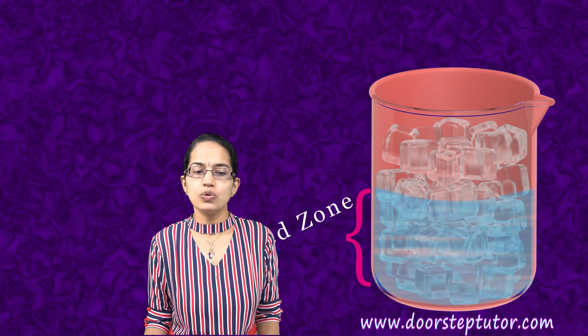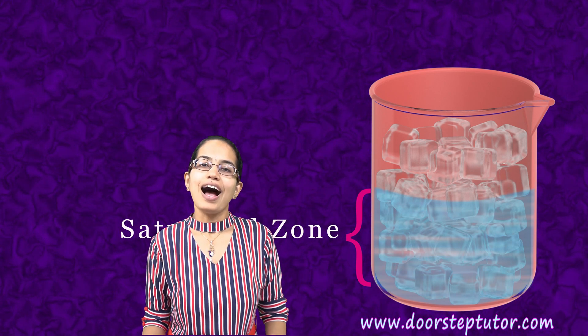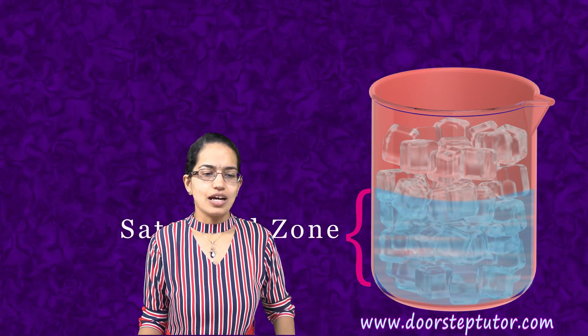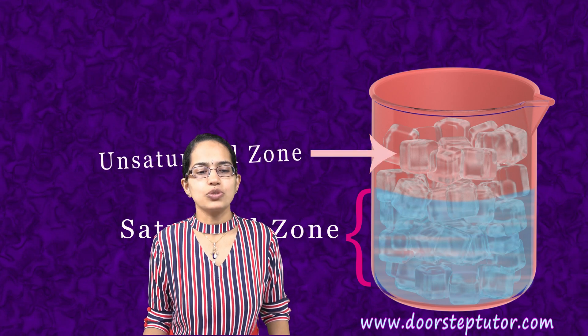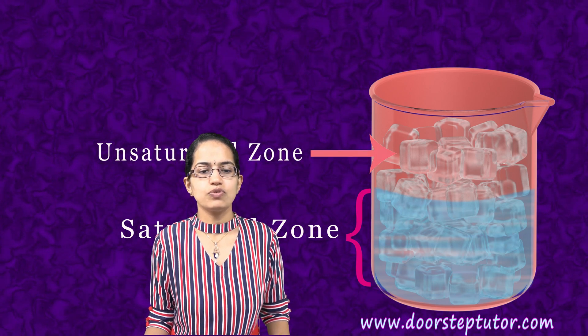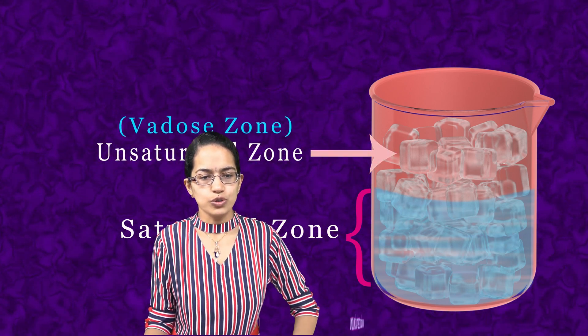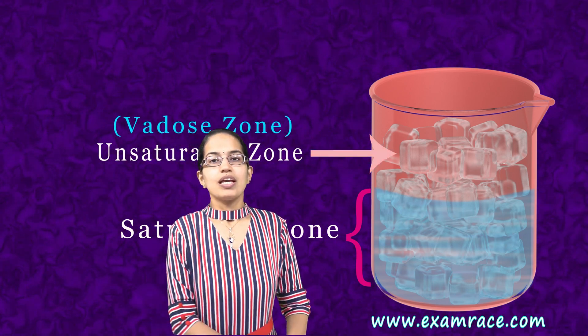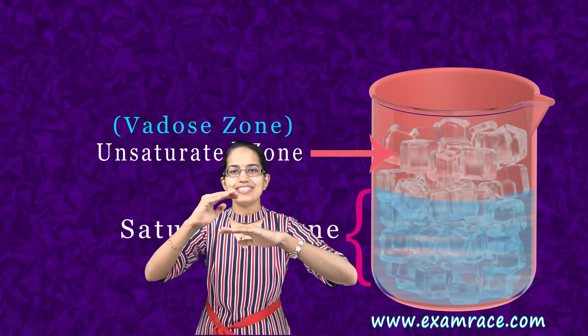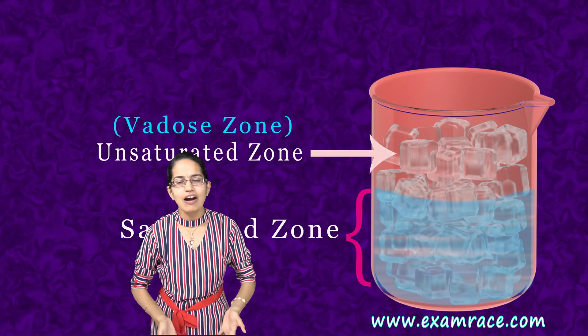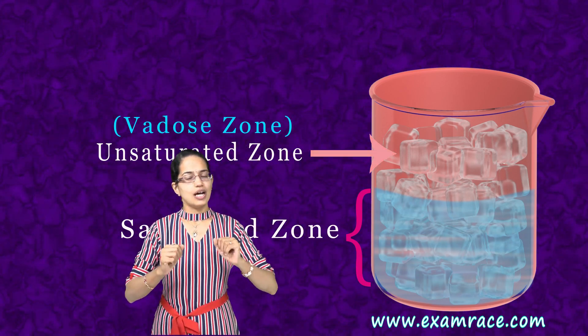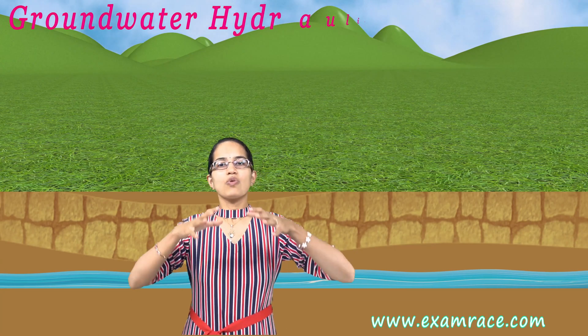The region which is below the complete filling of the juice we can say is the saturated zone, and the region above it is the unsaturated zone, which we also call the vadose zone. This is the same example that we have understood in our groundwater hydraulics.